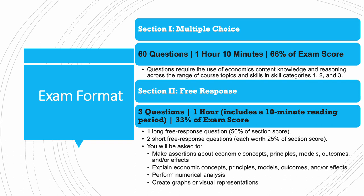The second section is the free response section, which includes three questions. You have one hour to answer them, including 10 minutes of reading time, and it comprises 33% of your exam score. It starts with one long free response question worth 50% of your free response score, followed by two short free response questions each worth 25%. In these questions, you are asked to make assertions about economic concepts, principles, and models, explain them and their outcomes and effects, make calculations and numerical analysis, and most importantly, create graphs or visual representations.